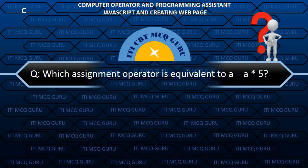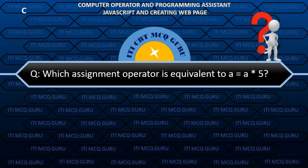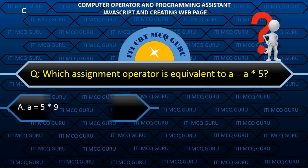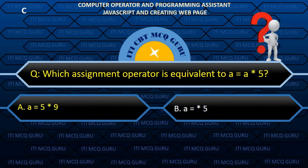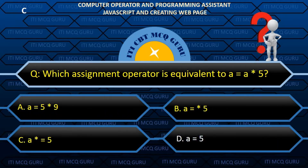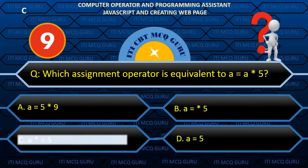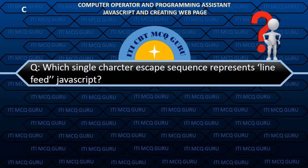Which assignment operator is equivalent to A equals to A star 5? C. A star equals to 5. Which single character escape sequence represents line feed in JavaScript?